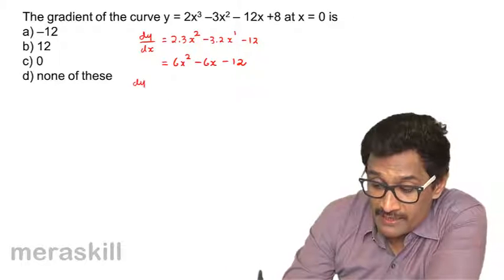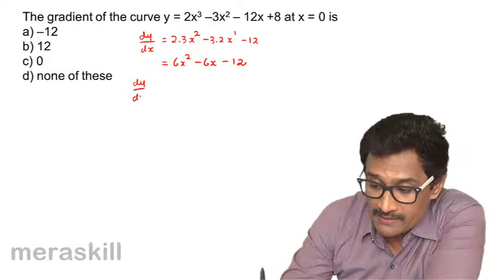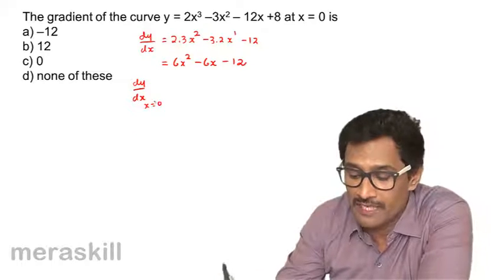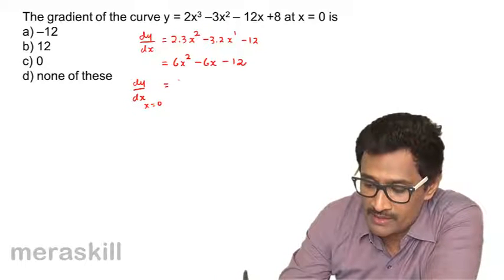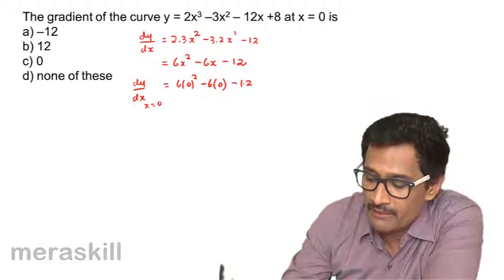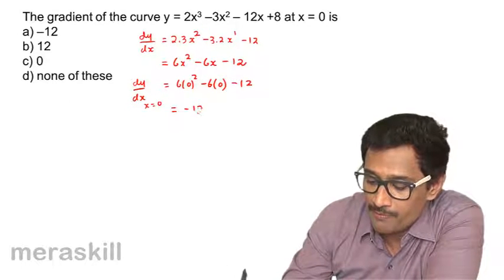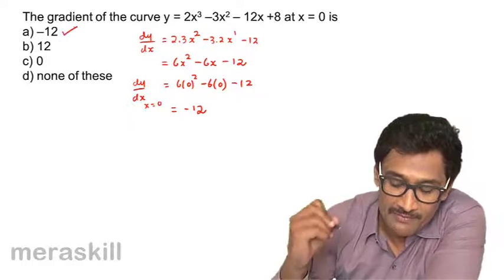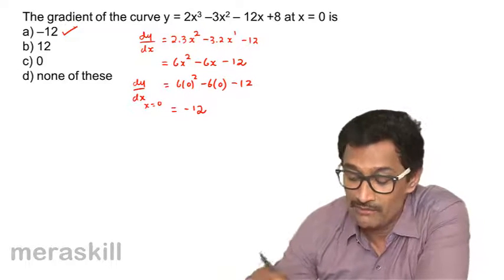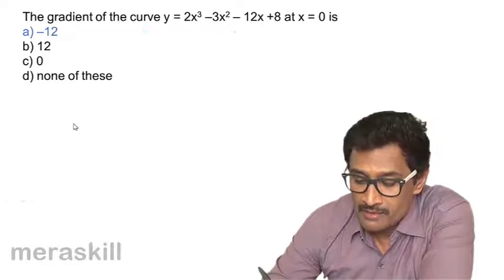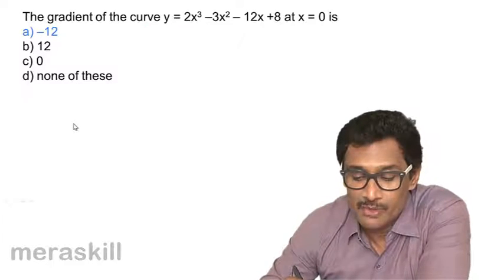Now dy/dx, that is the gradient of the curve — which is also the slope of the tangent to the curve — at x = 0 is 6(0)² - 6(0) - 12, which turns out to be -12. So we have -12.